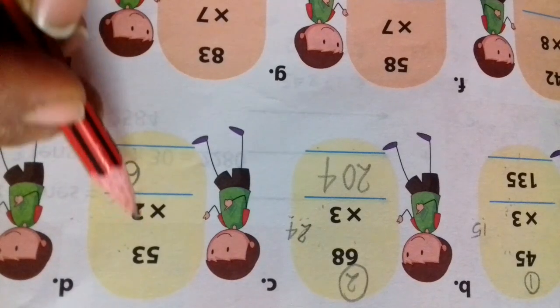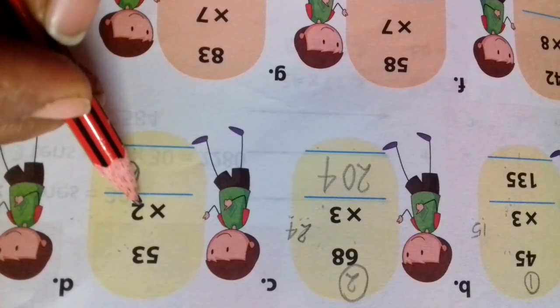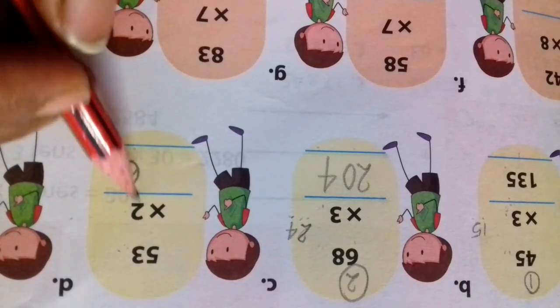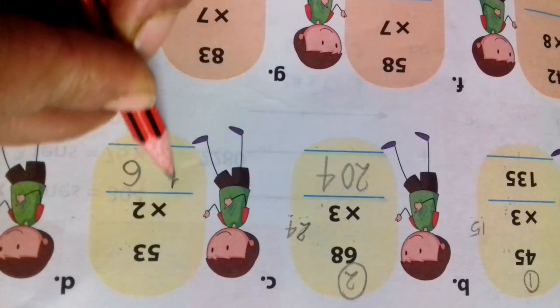Then we have 2 table 5 times. 2 ones are 2, 2 twos are 4, 2 threes are 6, 2 fours are 8, 2 fives are 10. The number of 10 is 10.